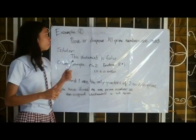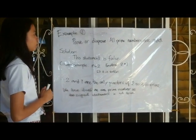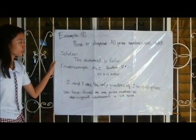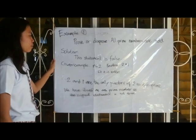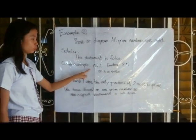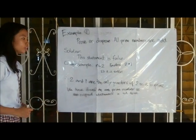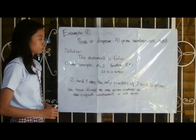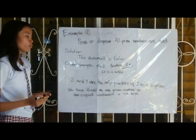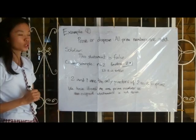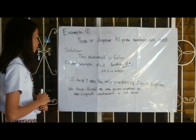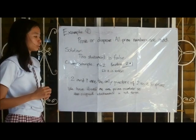Example 1: Prove or disprove — all prime numbers are odd. This statement is false. Our counterexample is n equals 2: the number 2 is even, but the only factors of 2 are 2 and 1, so it is prime. We have found an even prime number, so the original statement is not true.